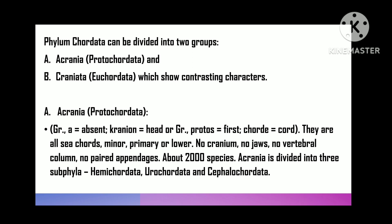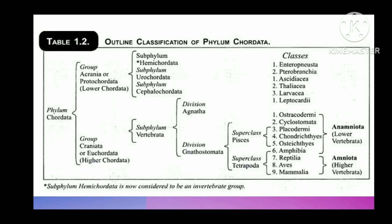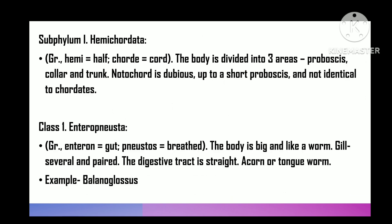This table shows the outline classification of Phylum Chordata. Acrania is divided into three subphyla: Hemichordata, Urochordata, and Cephalochordata. Subphylum 1 is Hemichordata — 'hemi' means half, 'chord' means chord. The body is divided into three regions: proboscis, collar, and trunk. The notochord is doubtful — confined to proboscis and non-homologous with that of chordates.